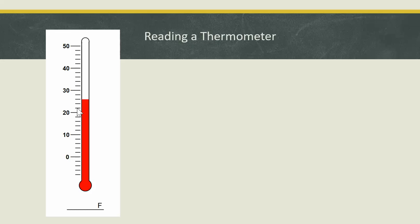So 20, 22, 24, 26, 28, 30. Okay, now I know my scale. I can find where the red line ends. That red line is at 26. Again, 22, 24, 26. So this thermometer shows a temperature of 26 degrees.